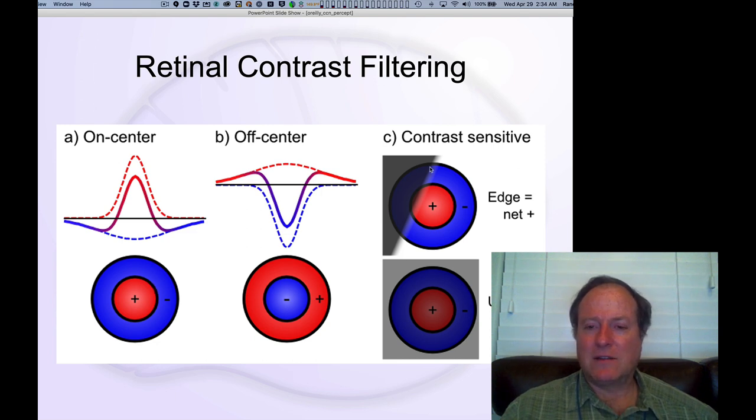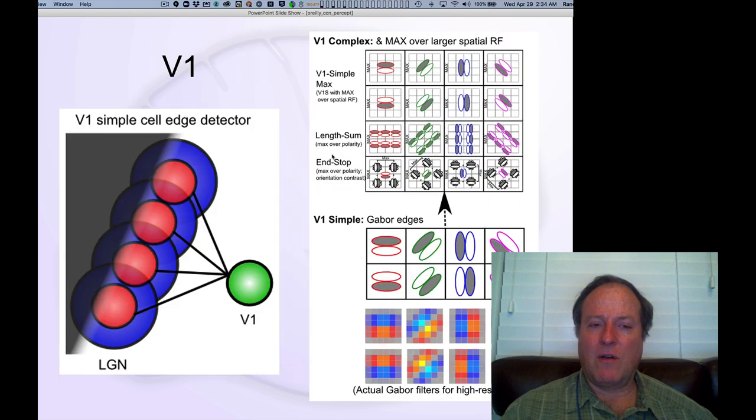And so what that means is shown over here that they're actually very sensitive to contrast. Places in the visual world where things go from being dark to light, as you can see here, or vice versa, in terms of the off-center, you get transitions from dark to light. In the retina, this encoding is kind of radially symmetric. So you can have these contrasts sort of anywhere coming along here. But when you go up into area V1, primary visual cortex,